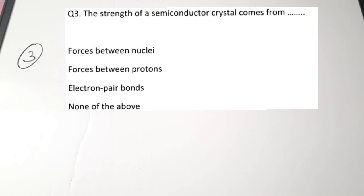The third question: the strength of a semiconductor crystal comes from dash — forces between nuclei, forces between protons, electron pair bonds, or none of them. We just saw the crystal bonding structure: there is a sharing of electrons present in the valence band between adjacent silicon atoms. A silicon atom shares its valence electron with other silicon atoms — so there is an electron pair bond happening. Correct answer is 3, electron pair bond.